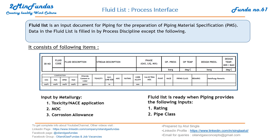We have the fluid list. The fluid list is another important document — it is an input document for piping and for the preparation of PMS. To start developing PMS, the first document required is the fluid list, and its data is filled in by the process discipline.